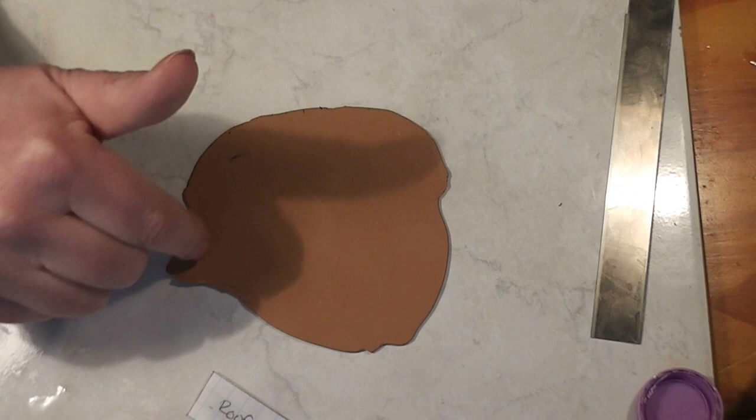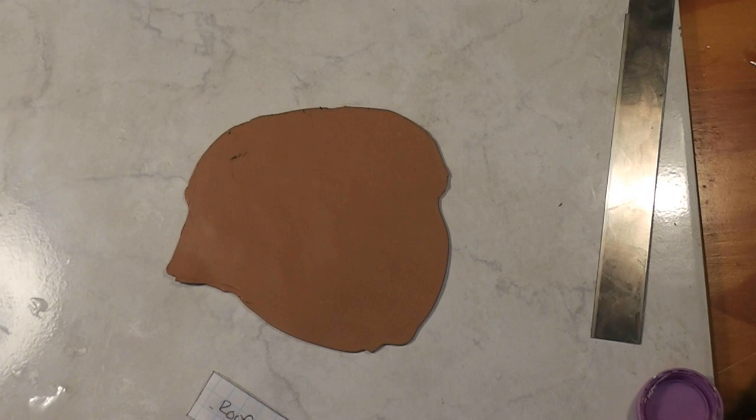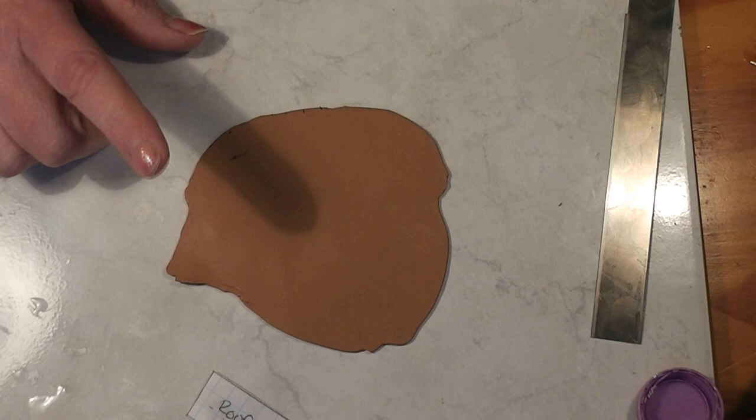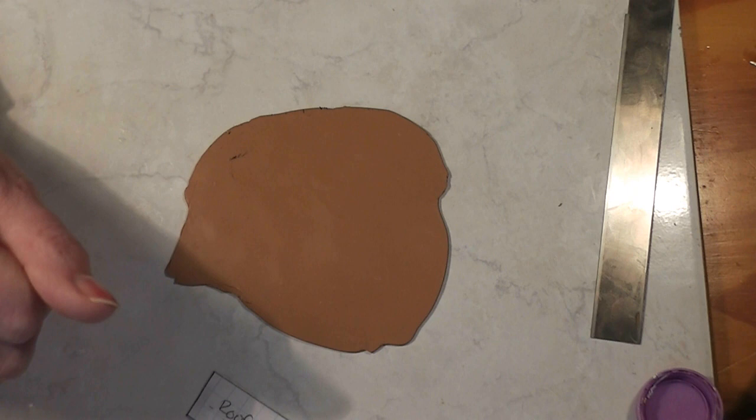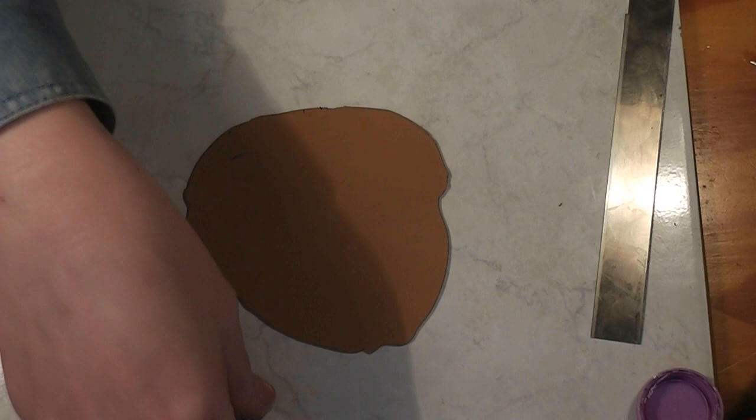So what we need to do then is we need to roll out some clay. You can either use Fimo caramel color, or you can do like I did. When I got started this morning, I couldn't find my caramel color, and then of course I found it later. But this is just a mixture of whatever brown clay I had on my table - some brown, some white, and some yellow. I just mixed that together and I came out with a color that I'm happy with.